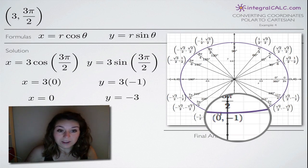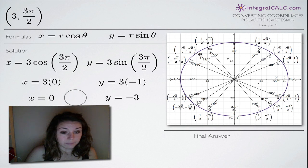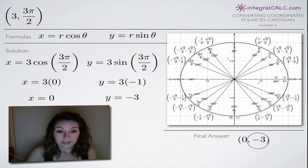So that's how we evaluate at the angle 3π/2. And then we simplify and now all we have to do to get the Cartesian coordinate is simply put these two together. So our Cartesian coordinate will end up being (0, -3).